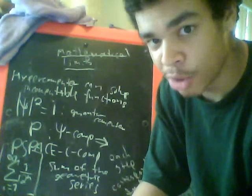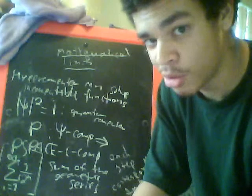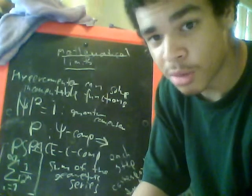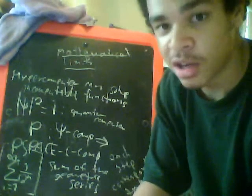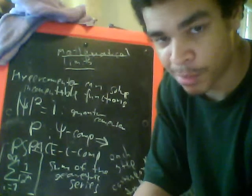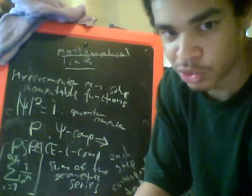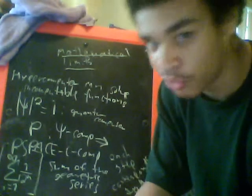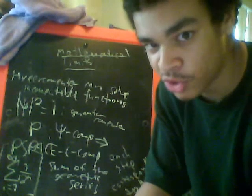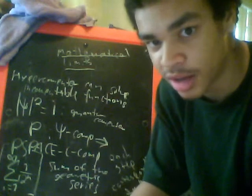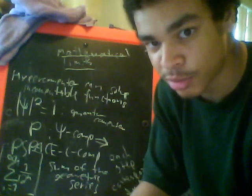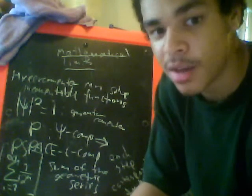That would mean that a classical computer's polynomial space algorithms can be reduced to quantum computer polynomial time algorithms, which means they're feasible and therefore an efficient algorithm. Because polynomial space is not efficient and exponential space is even less efficient than that.